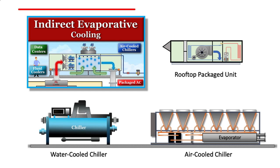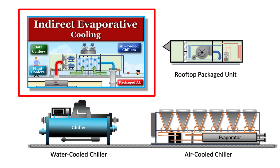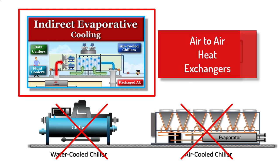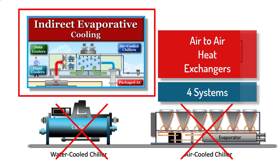In this video, we'll learn how indirect evaporative coolers work. By using indirect evaporative cooling, some buildings can eliminate mechanical refrigeration-based systems while reducing environmental impact. Indirect evaporative coolers use air-to-air heat exchangers to optimize approach temperatures. We'll show you four systems that use the indirect evaporative cooling method.